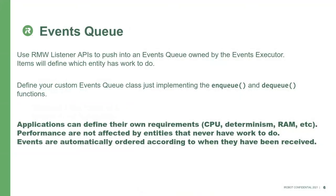The second very important component of the event executor is the event queue. Once we have RMW listener APIs, we can use them to push notifications into an event queue. Each notification will contain the ID of the entity that generated it and some metadata required to execute the subscription or other entity. The event queue provides several advantages: events are automatically ordered because as soon as something is ready, it pushes into the queue and events are processed in order.